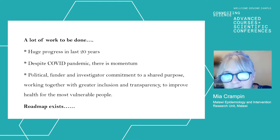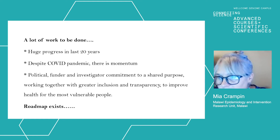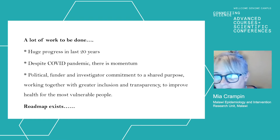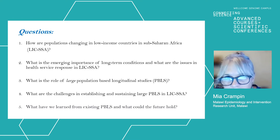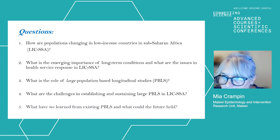There is clearly a lot of work to be done, but there has been huge progress made in the last two decades. Despite the challenges thrown in our path, there's massive commitment from the key players to respond to the long-term conditions challenge, and we do have a very clear roadmap for the way forward. I hope I've managed to lead us through some of these critical questions and I'll be available for a question and answer session. I hope in the audience are some key people who've been involved in these Malawi cohorts, both past and future — notably Albert Dube, Owen Nkoka, and Alison Price. Thank you for your time.